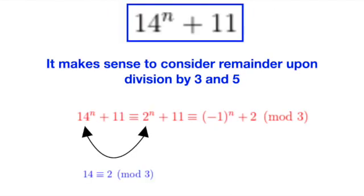Back to our earlier question, remember that we want to show that 14 power n plus 11 can be divisible by 5 and 3 alternately. To do this, let's express everything in modulo 3 and modulo 5.